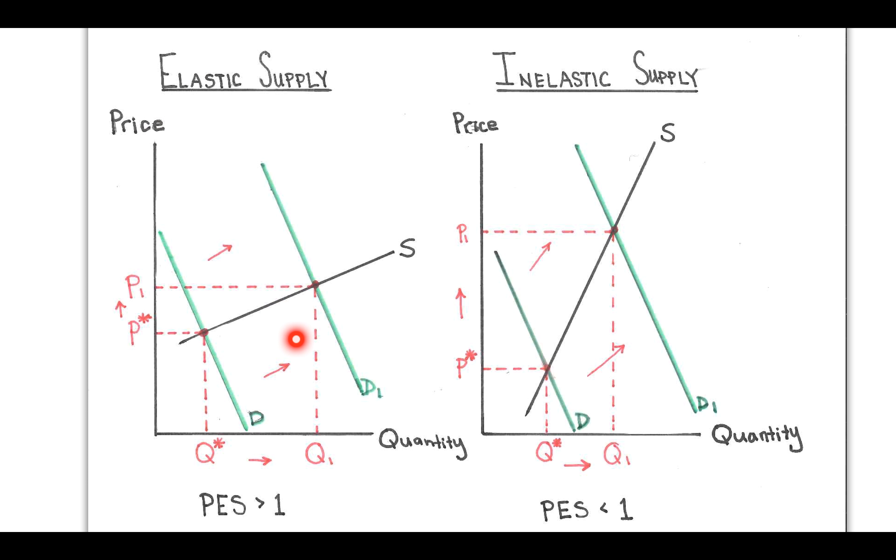Now what that means is when there is an increase in demand, so our initial starting point is P star, Q star, and then there's a sudden increase in demand.